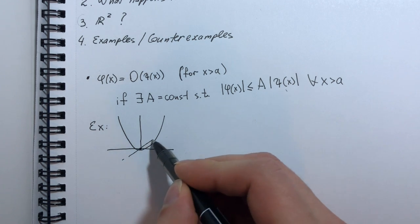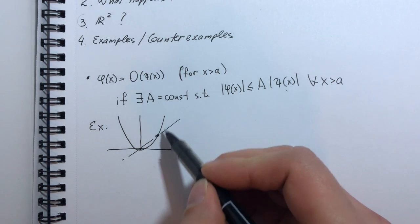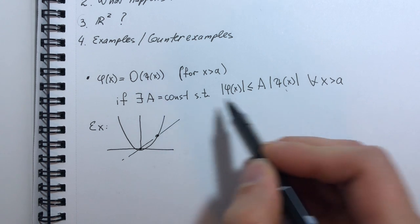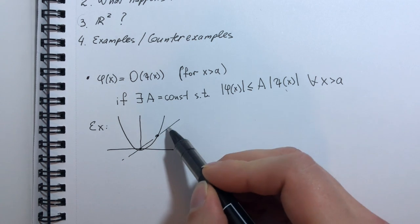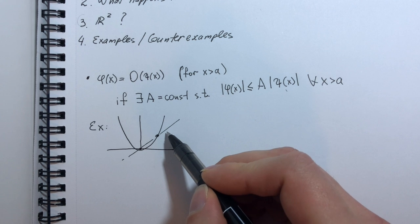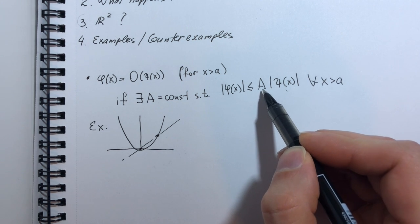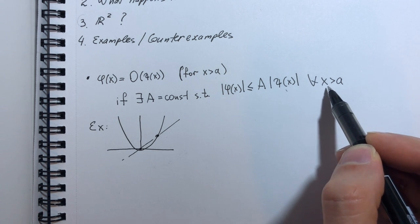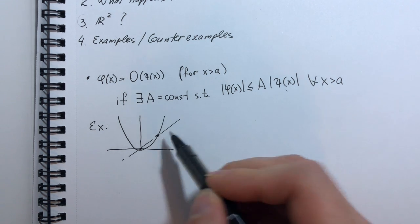you see that the parabola, after a certain point, will exceed the value of a linear function, and so we can pick the value of A to be any constant, and that is going to be true for all x after some point.